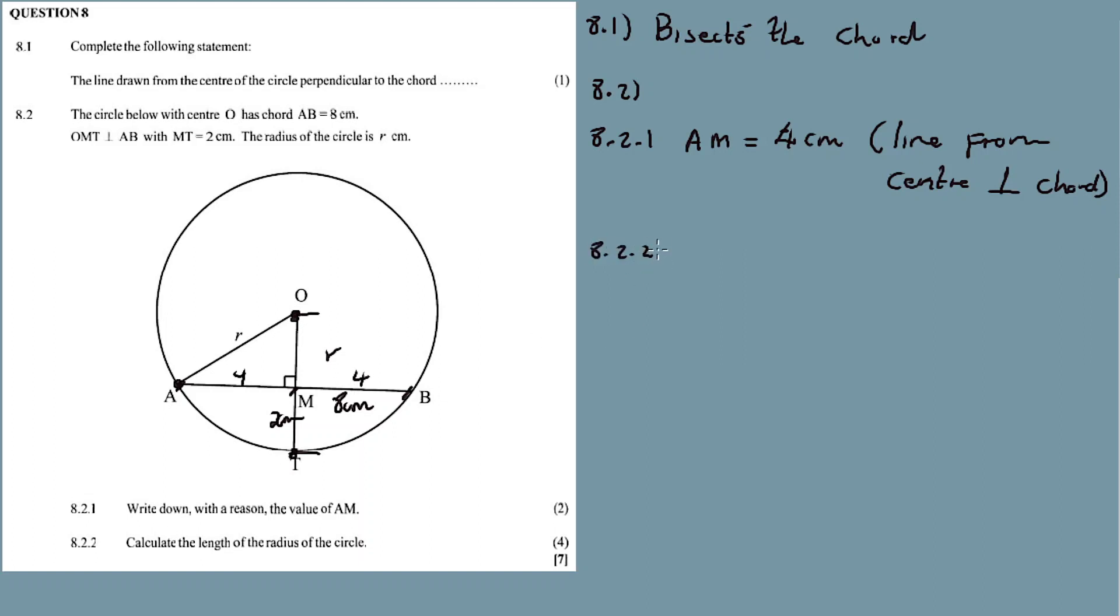8.2.2: Calculate the length of the radius. In other words, calculate the value of R. So we have a right triangle OMA. In triangle OMA, AM which is the side is equal to 4 centimeters. OA which is R is the hypotenuse. R is equal to R centimeters.